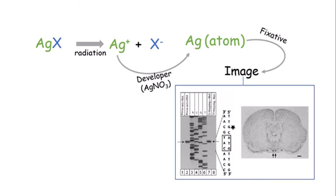There is a silver halide, and the radiation coming from the sample breaks it. After development it produces an image, and we can observe certain patterns in the section, or if we are taking some sort of electrophoretic pattern we can observe the particular sample that has been autoradiographed.